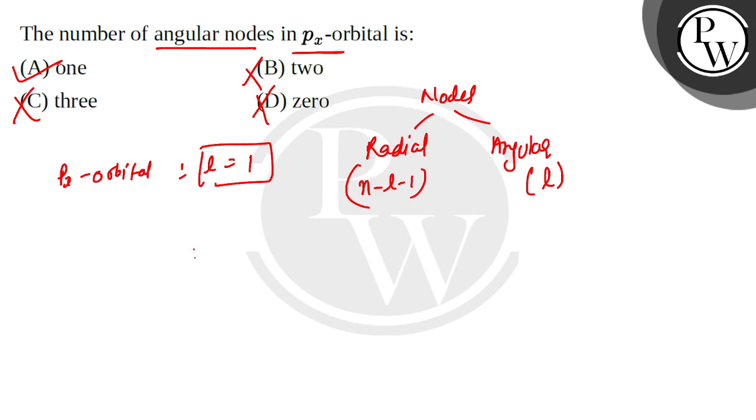Let's say this is our y axis and this is our x axis. Then the px orbital will be something like that: positive, negative. What will happen at this point? The electron's density is zero. So we will call this angular node.